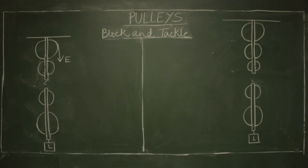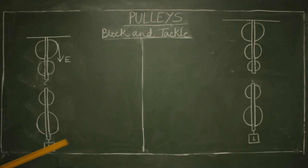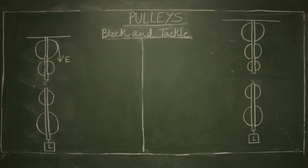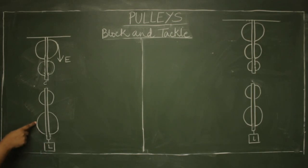The first diagram shows four pulleys — this is the diagram for an even number of pulleys, and the other one is for an odd number of pulleys. Let us begin with the first one, where the number of pulleys is even. The upper one, which is fixed, is the block, and the lower one, which is movable, is the tackle. The load is attached to the movable part of the system.